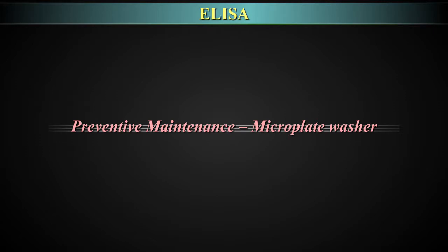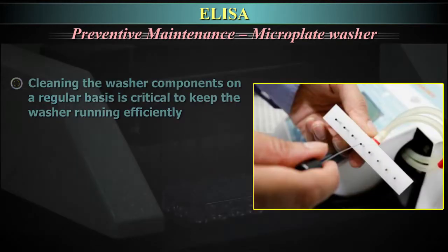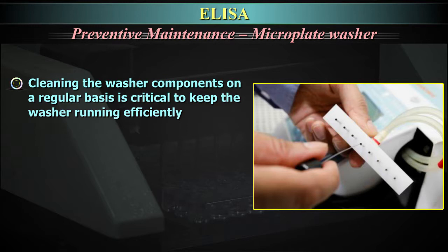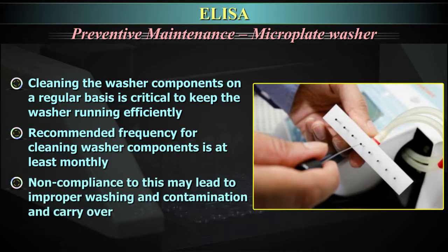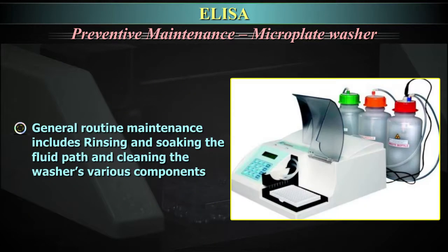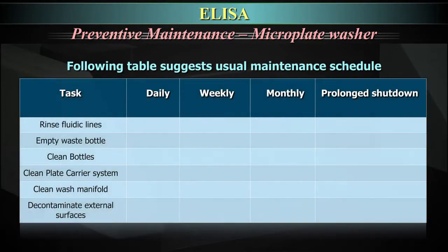Preventive maintenance of the microplate washer. Cleaning the washer components on a regular basis is critical to keep the washer running efficiently. The recommended frequency for cleaning washer components is at least monthly. Non-compliance may lead to improper washing, contamination and carryover. General routine maintenance includes rinsing and soaking the fluid path and cleaning the washer's various components.